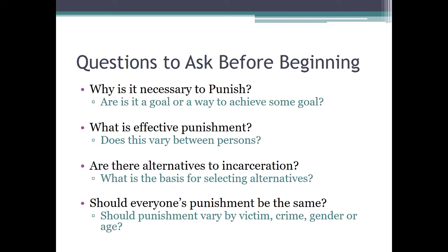Should everyone's punishment be the same? Are we seeking a system of punishment that is exactly identical for each person? Or should it vary depending upon what crime they commit — most people would say yes — who the victim was, what the gender is of the offender or the victim, or what the age of the offender or the victim is? All of these point us in directions to help us understand how we're thinking about these problems.